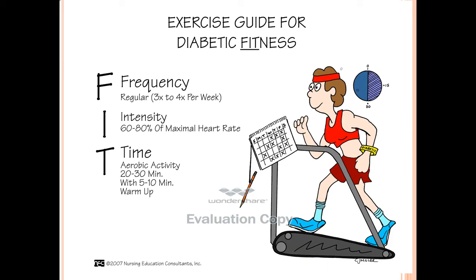The second point in lifestyle modification is exercise. Very simply put, there is the FIT mnemonic: F stands for frequency, and you should aim for about 4 to 5 times per week of exercise. Your intensity should be to achieve about 60 to 80% of maximal heart rate. You calculate this by taking 220 and subtracting your age — that gives you your maximal heart rate — and you should not exceed 80% of this ideally. For timing, you should be doing aerobic activity for approximately 20 to 30 minutes per day, and in a week you should have done at least 150 minutes in total.